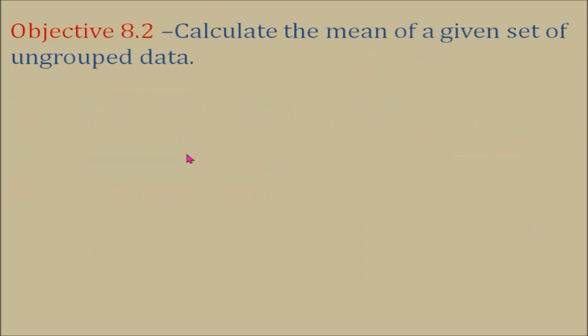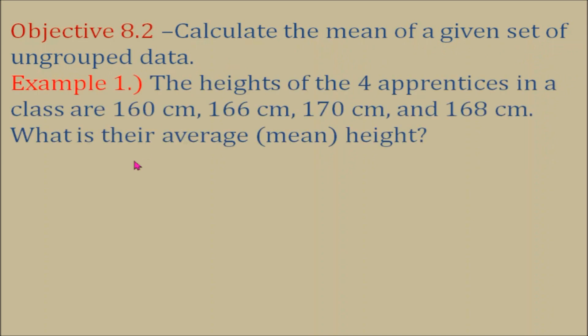Objective number two, calculate the mean of a given set of ungrouped data. Example number one, the heights of the four apprentices in a class are 160 cm, 166 cm, 170 cm, and 168 cm. What is their average or mean height?